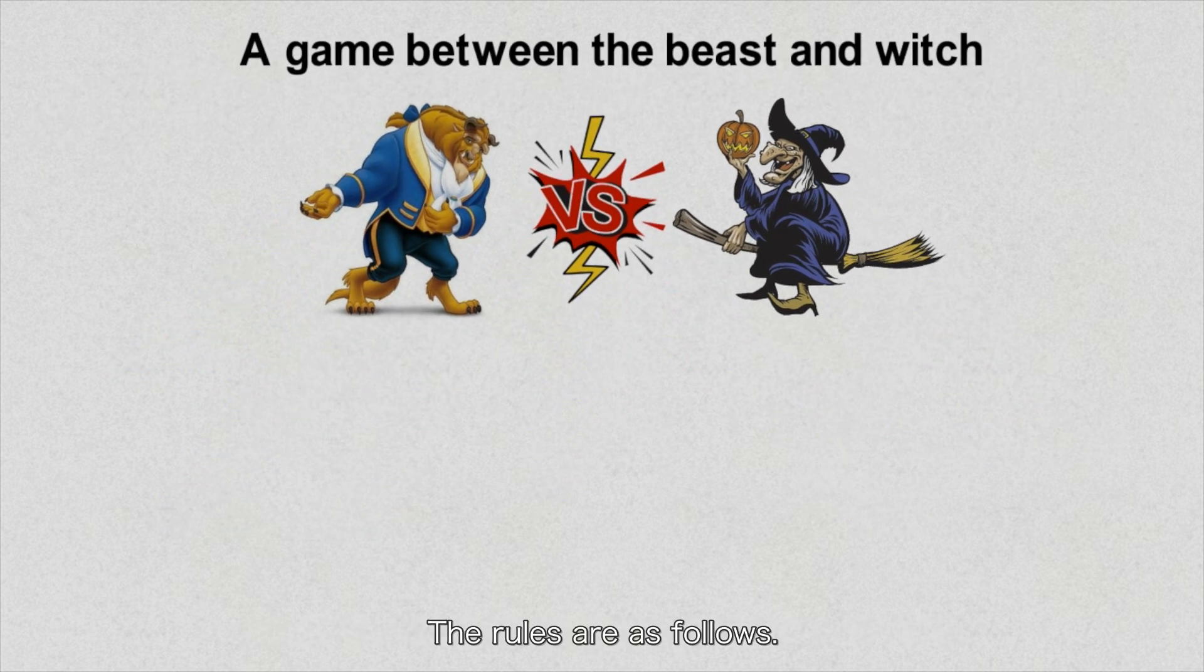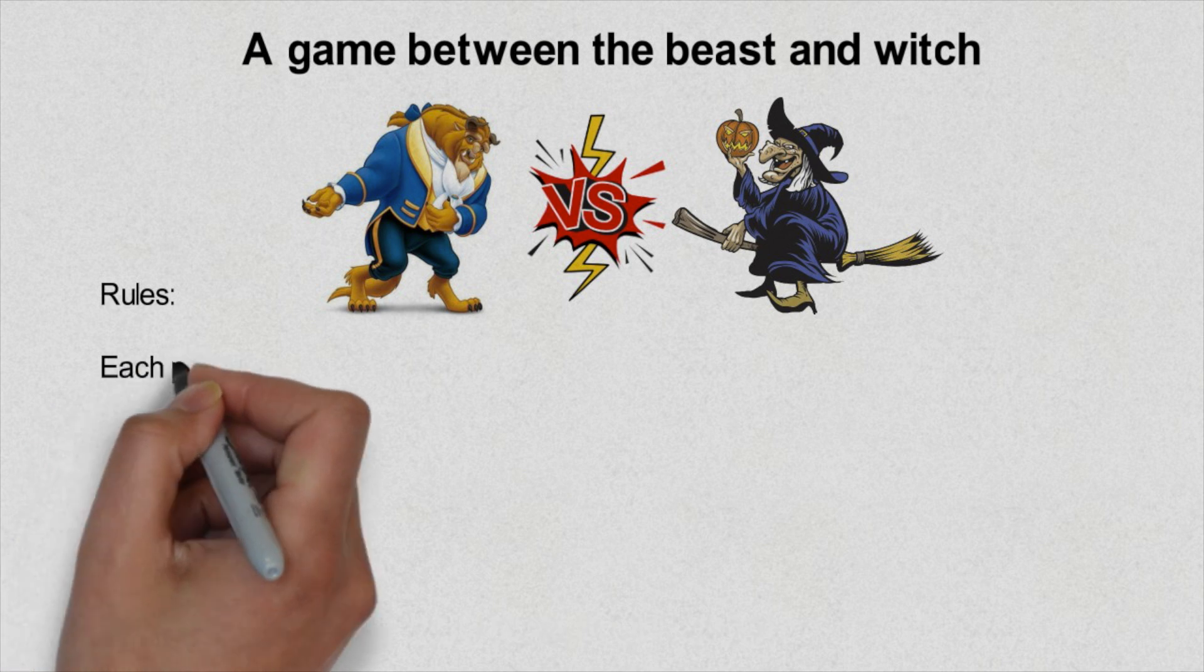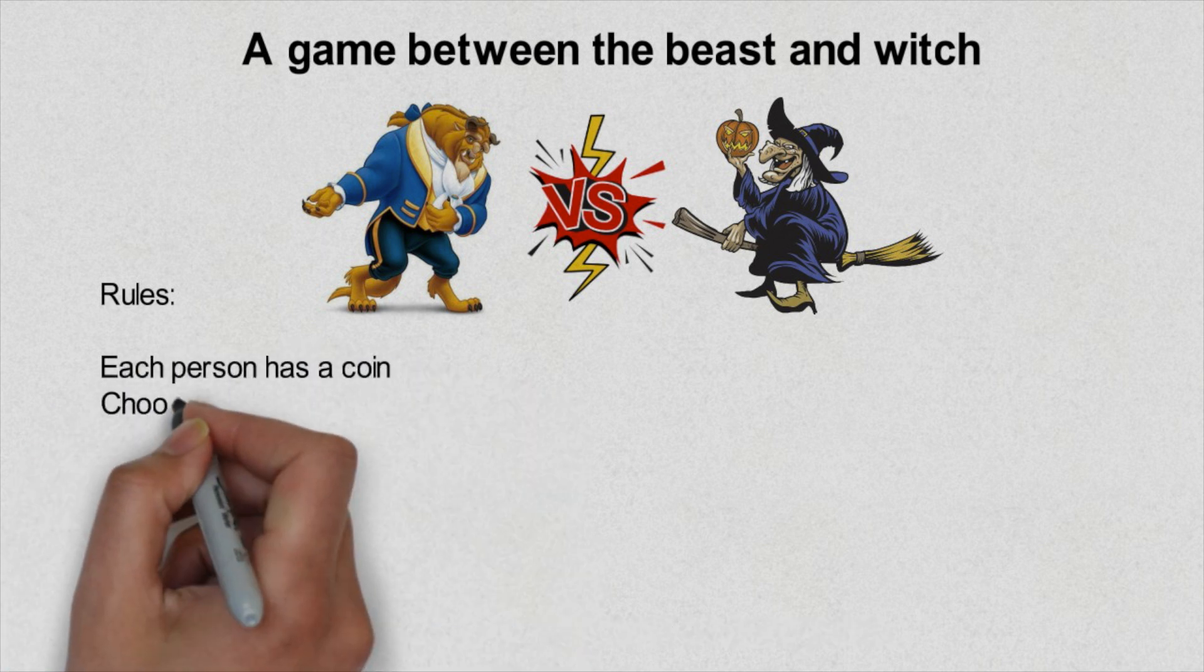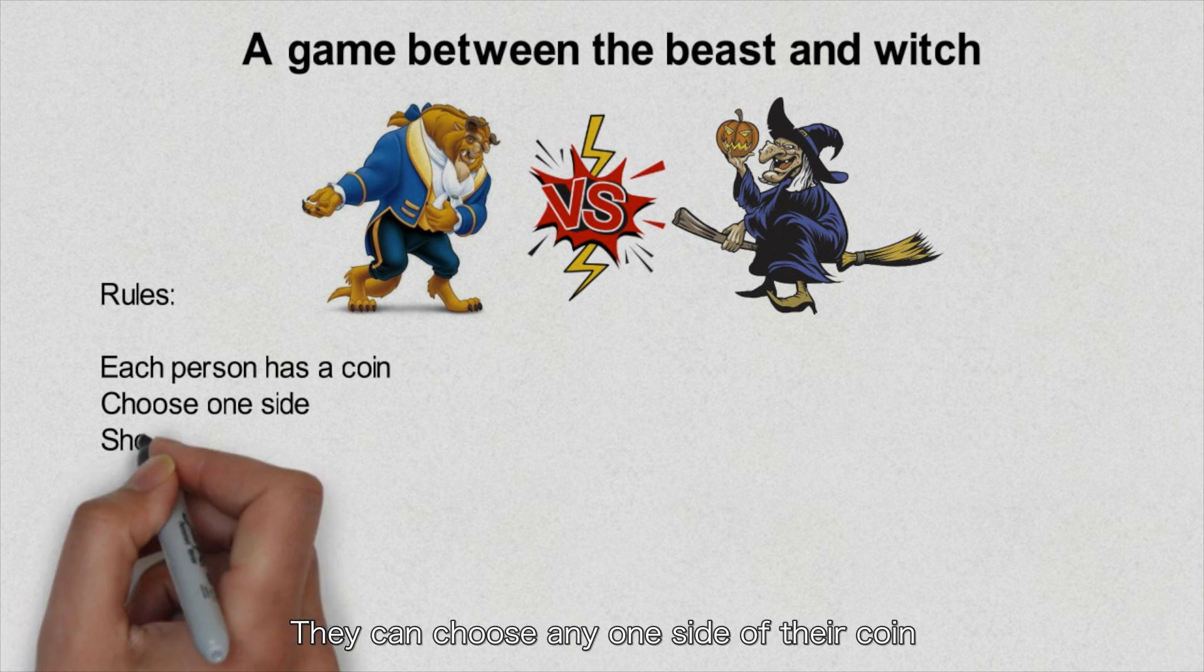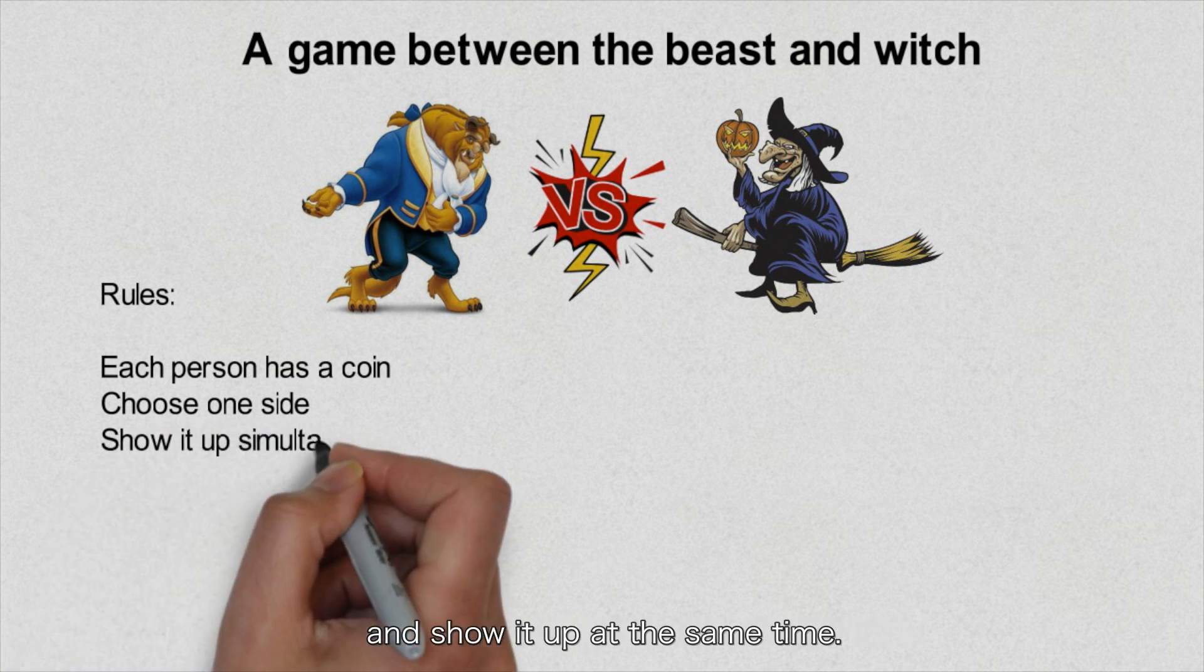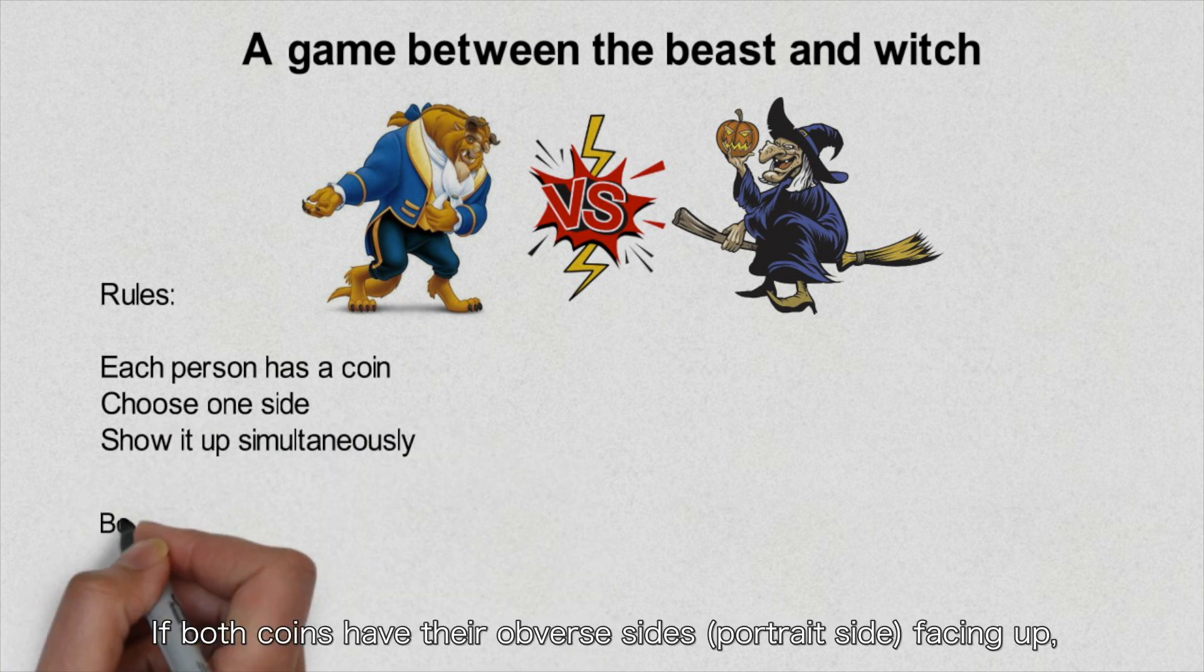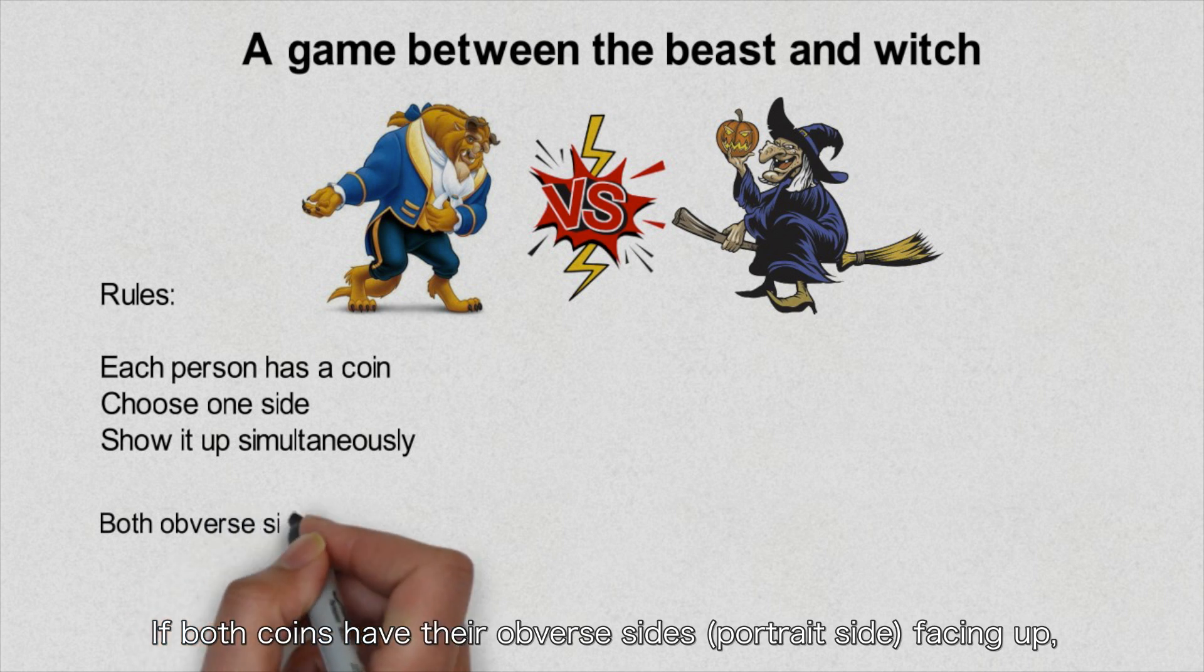How to play this game? The rules are as follows. Both the witch and beast have a coin. They can choose any one side of their coin and show it up at the same time.